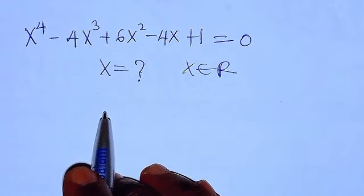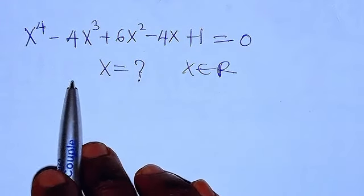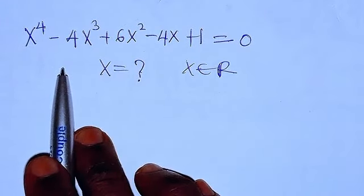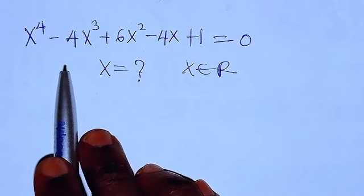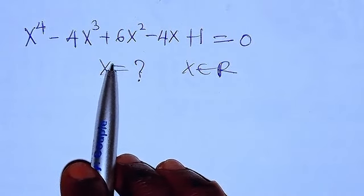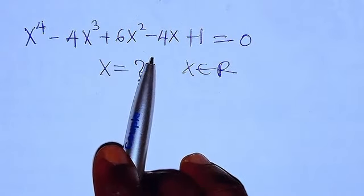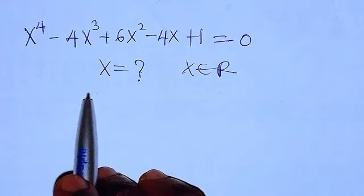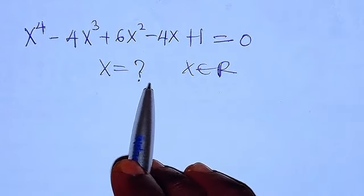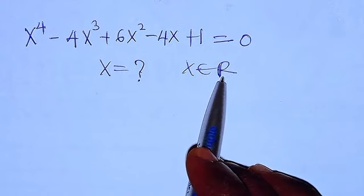Hello, good viewers, you are welcome. We have this equation: x raised to the power of 4 minus 4x to the power of 3 plus 6x squared minus 4x plus 1 equals 0. We want to know the value of x, and the value of x must be a real number.